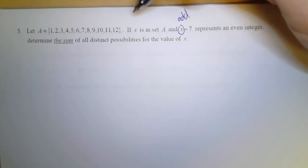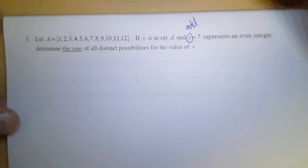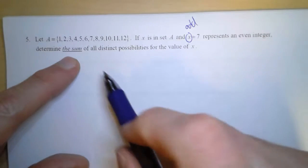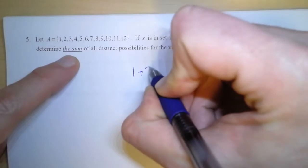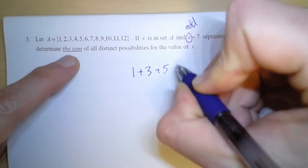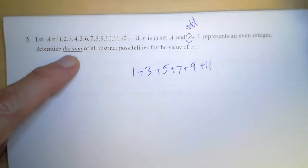So that means looking back, we're only going to look at the numbers in this set that are odd. And so we want the sum of all those possibilities. So 1 plus 3 plus 5 plus 7 plus 9 plus 11.